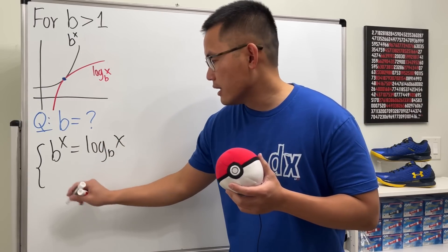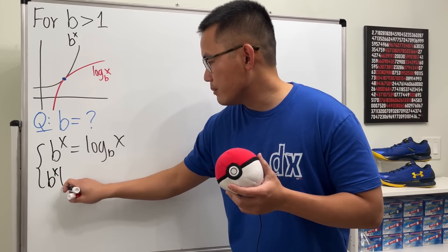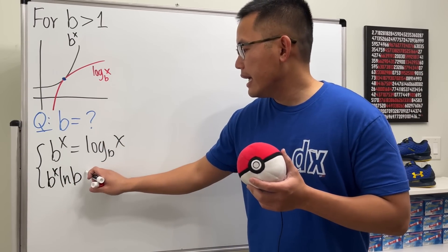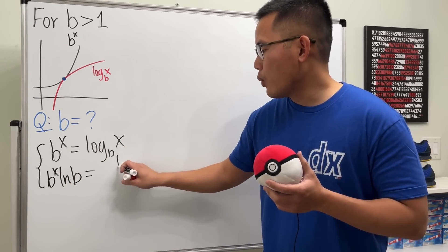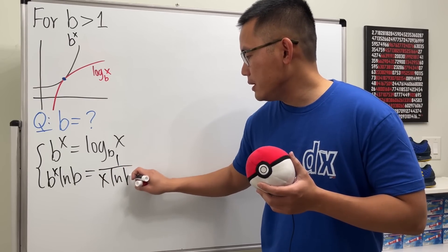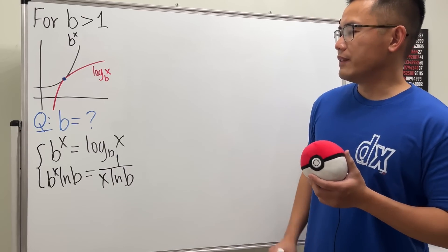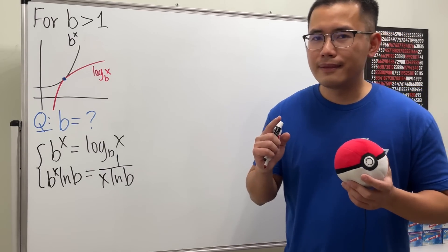Let's differentiate. We get b^x times ln(b), and if we differentiate this we get 1/(x ln(b)). So we do have a system of equations, but how to solve this?